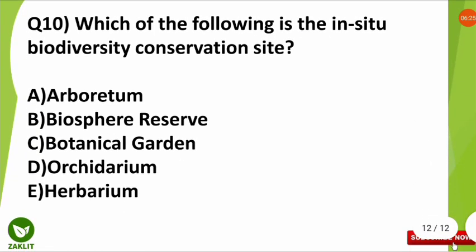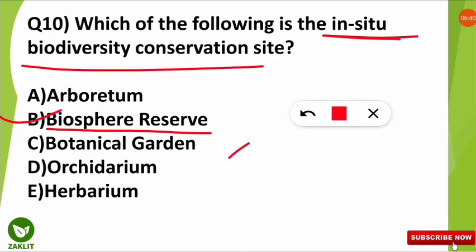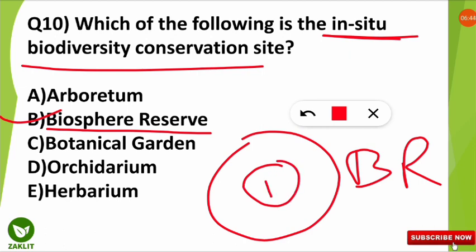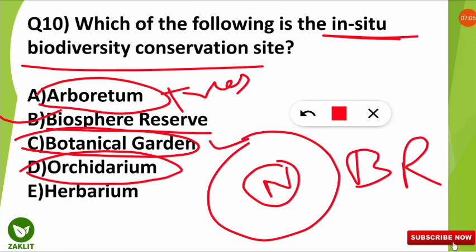The 10th question was: which of the following is an in-situ biodiversity conservation site? In-situ means on that particular site where the species are present. The correct option is B — biosphere reserves are examples of in-situ biodiversity conservation sites, and national parks are present inside biosphere reserves. Arboretum are botanical gardens specifically for trees; orchidarium are botanical gardens specifically for orchids; herbarium are preservation collections of plants and plant parts for study.